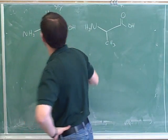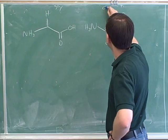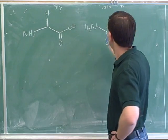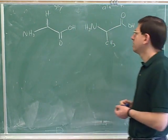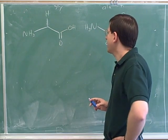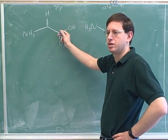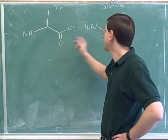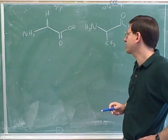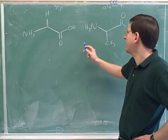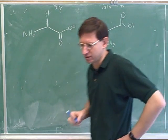This is glycine, which has a hydrogen side chain. And this is alanine, which has a methyl side chain. Let's draw the mechanism for a reaction that can occur. What type of functional group is this? Let's draw the mechanism for the reaction that can occur between the amine end of the alanine and the carboxylic acid end of the glycine.